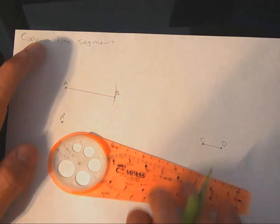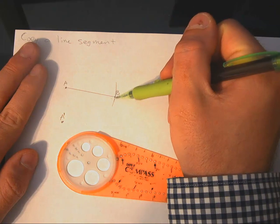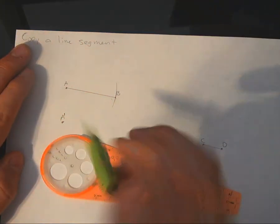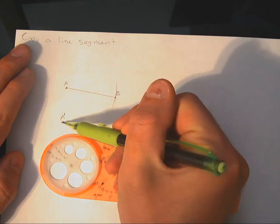We're going to use that same dot down here, but instead of putting the center on A, I want to put it on A prime.